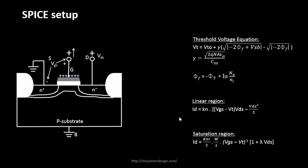We have the background of all these equations. Some quantities in these equations — the ones highlighted in yellow — are constants called technology constants. For example, if you work on a technology node like 1.2 micron or 180 nanometers, these constants come from the foundries. Every technology node — 1.2 micron, 180 nanometers, 20 nanometers — will have its own unique values. You provide these to the engine through a special file called the model file.